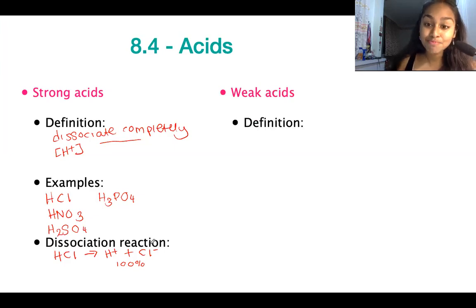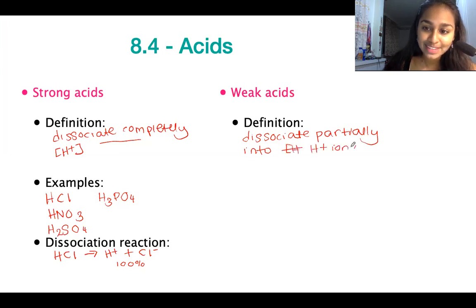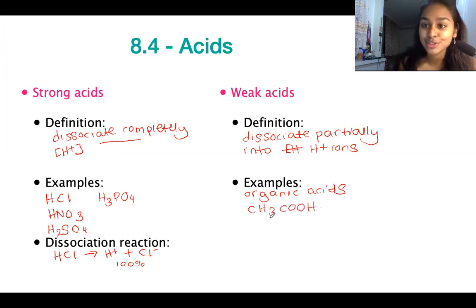Now let's look at weak acids. By definition, weak acids only dissociate partially into H+ ions. Examples of weak acids include all our organic acids, so your carboxylic acids. Main examples include ethanoic acid. Another example that you often see is also carbonic acid, H2CO3. So essentially anything with a carbon in it, we consider these organic acids and therefore we regard these as weak acids.